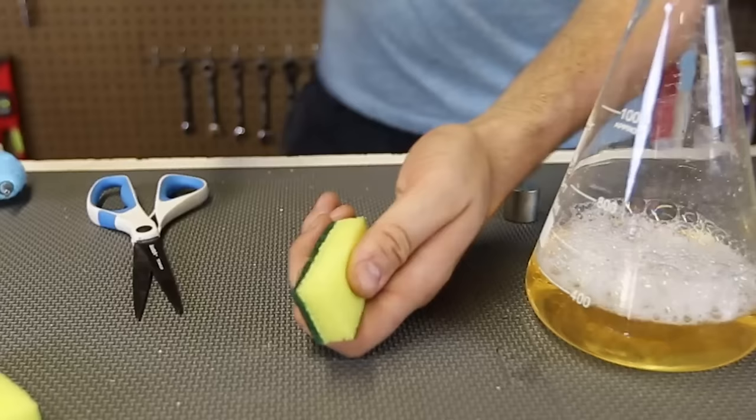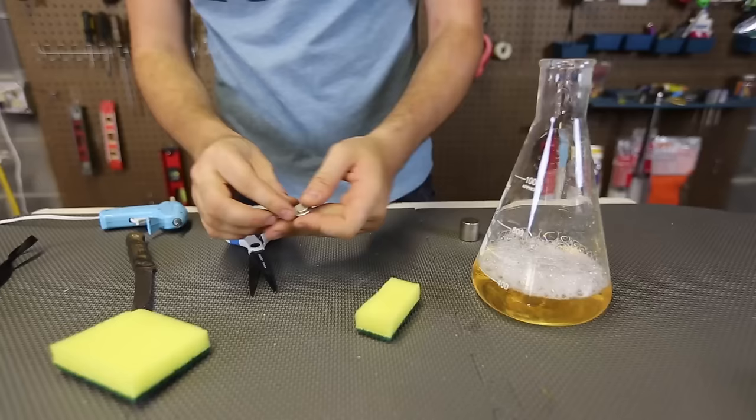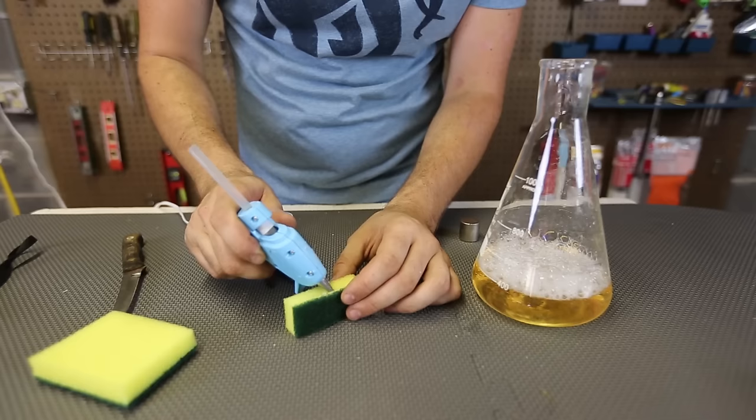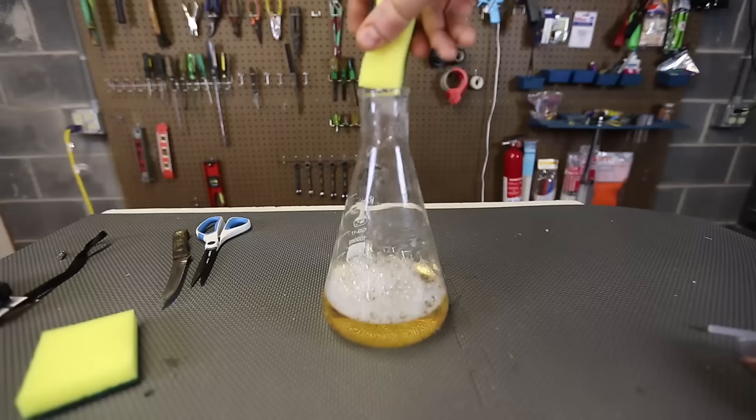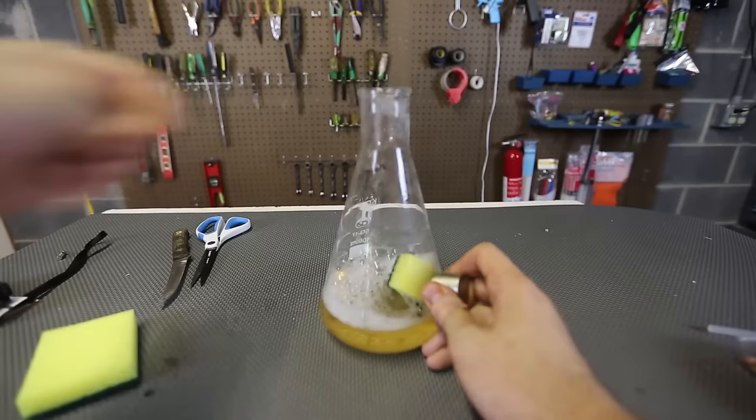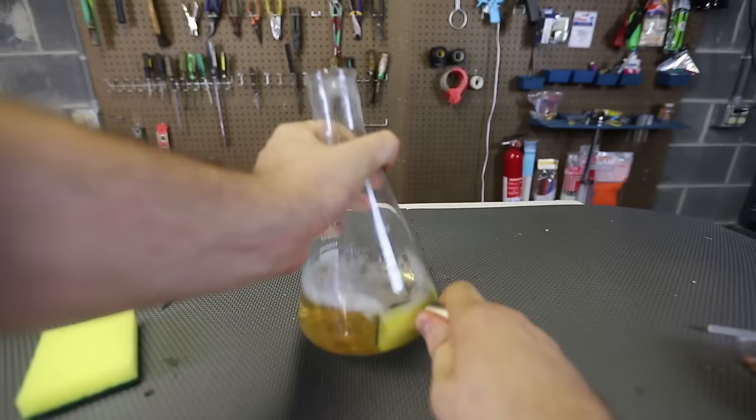Just grab a sponge and cut it in half like this. Then we're going to get a knife and open it up. Like this. And then we're going to put our neodymium magnet right inside of it. Then we will need hot glue and cover it up so it does not fall out. We're going to let it dry out a little bit. Then we're going to grab that sponge and drop it inside there.